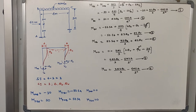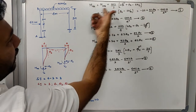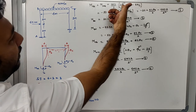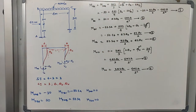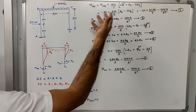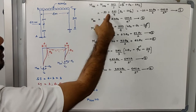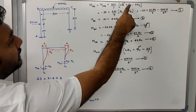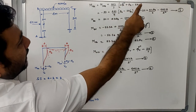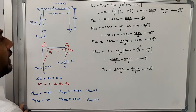With fixed end moments known, the next step is to write the slope deflection equations. For M_AB: M_AB = MF_AB + (2EI/L) × [2θ_A + θ_B − 3Δ/L]. Here MF_AB = −30, L = 4, and θ_A = 0 because of fixity, leaving θ_B and the −3Δ/L term. This gives the first slope deflection equation.